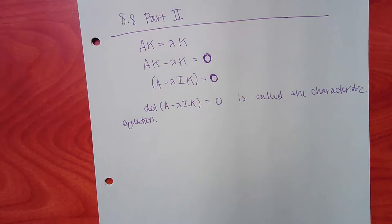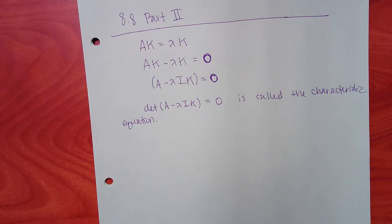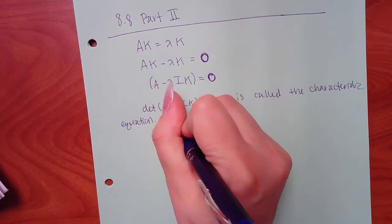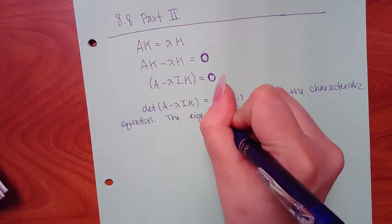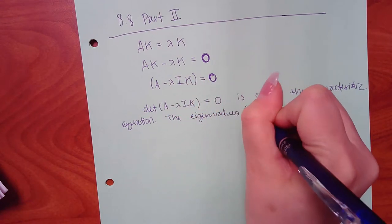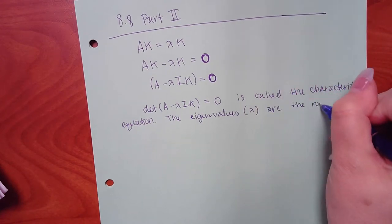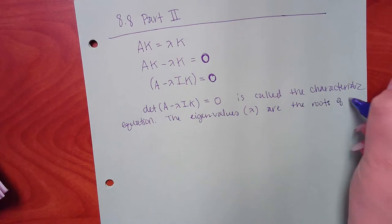This equation is what you use to first find the eigenvalues, then use those eigenvalues to find the corresponding eigenvectors, because each eigenvector has its own lambda. The eigenvalues — the lambdas — are the roots or solutions of the characteristic equation.